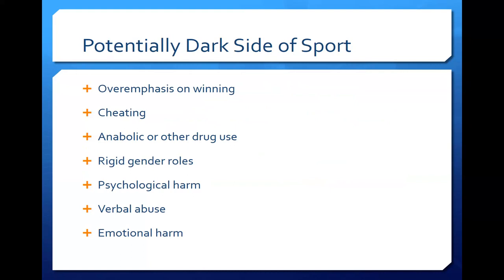Psychological harm is another concern — how we interact with sport mentally can produce some negative things. Some of the ways we're taught to go about sport can translate negatively into real life. I hear a lot about how some sports make people aggressive, and then you see people getting in trouble for domestic abuse. If it can be attributed to sport, we need to find other ways to generate performance within sport without creating that negative psychological outcome. That can extend into verbal abuse and emotional harm as well.